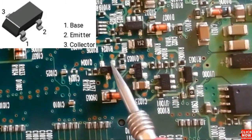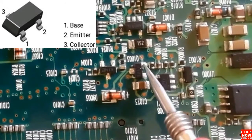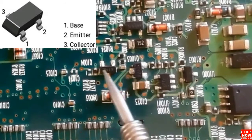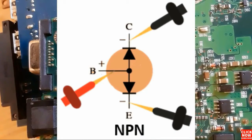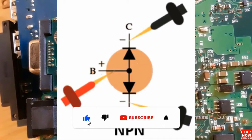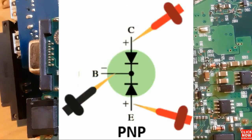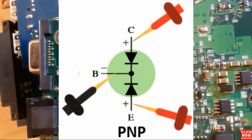We're going to test all kinds of transistors using the multimeter. First, you should locate the base, collector, and emitter. An NPN transistor gives you a reading when you put the red probe in the base and the black probe once in the collector and once in the emitter.